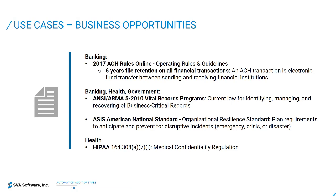This slide talks about the different regulations in place in the United States based on industry and banking. For example, there are regulations to have data available for six years for certain financial transactions. For health, we have the HIPAA regulations for medical confidentiality. So if you have clients that belong to these industries, they might be looking for a way to automate their audit process.